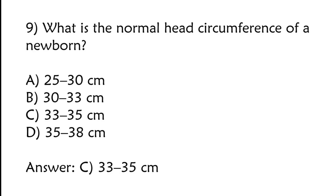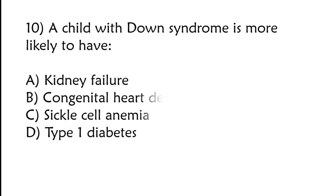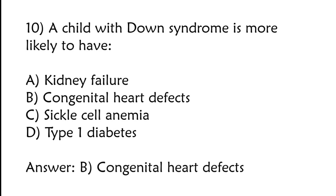33 to 35, 35 to 38. Correct answer is option C. A child with Down syndrome is more likely to have kidney failure, congenital heart defects, sickle cell anemia, type 1 diabetes. Correct answer is option B, congenital heart defects.